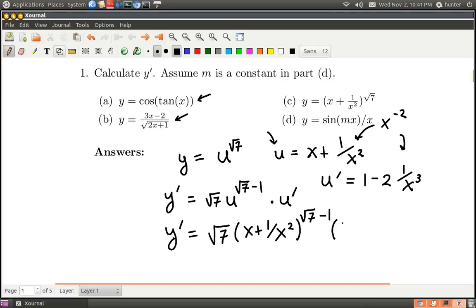Alright, and so let me write that in here. So 1 minus 2 divided by x cubed. And that's the answer for c. Man, so we're really tracking right along. Maybe I'll just leave this up on the screen for one sec.